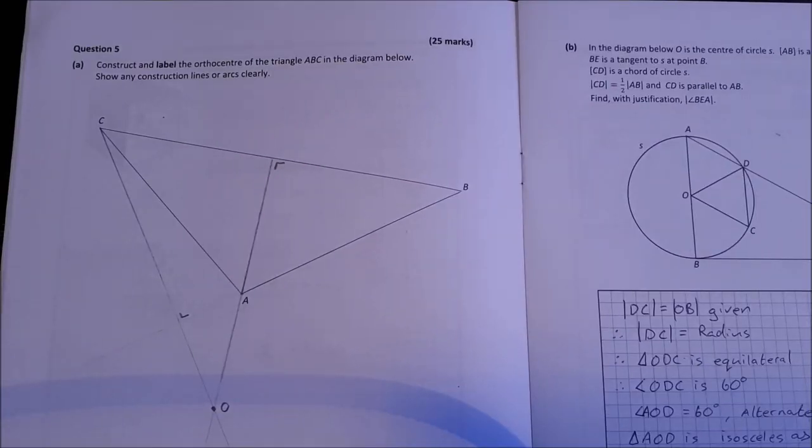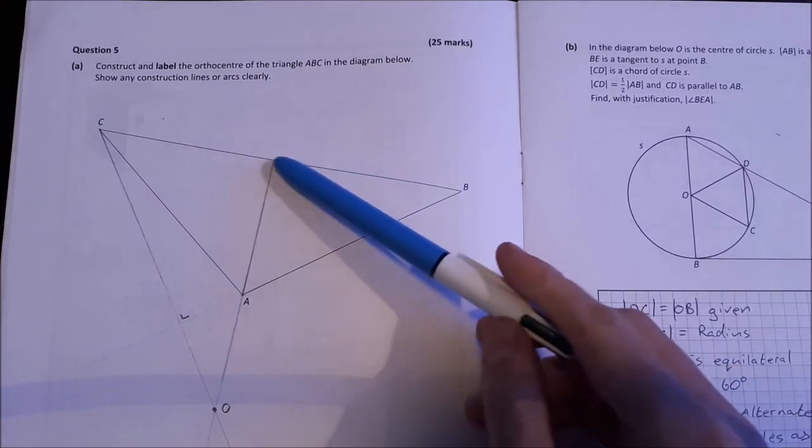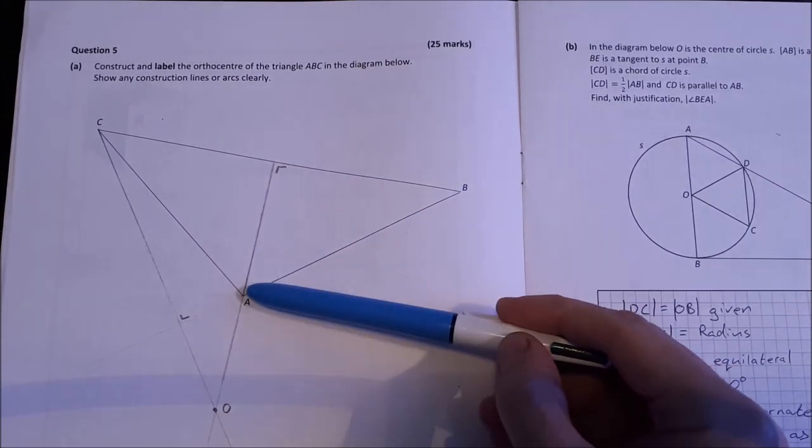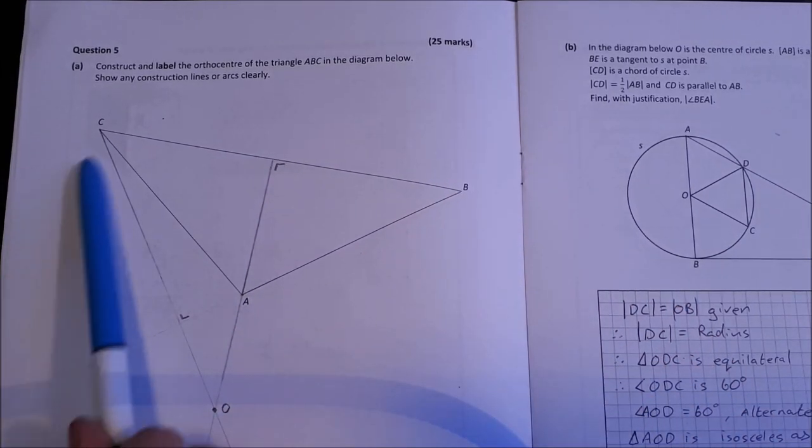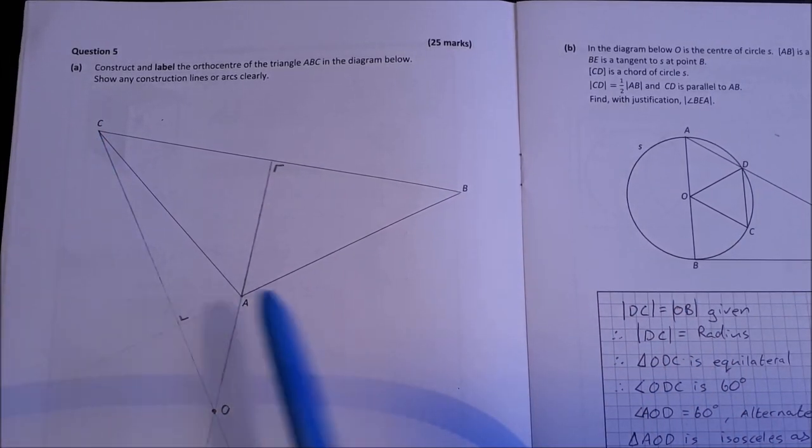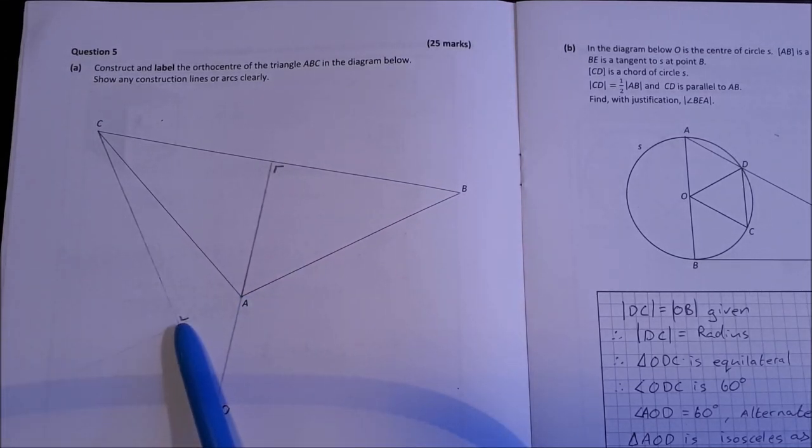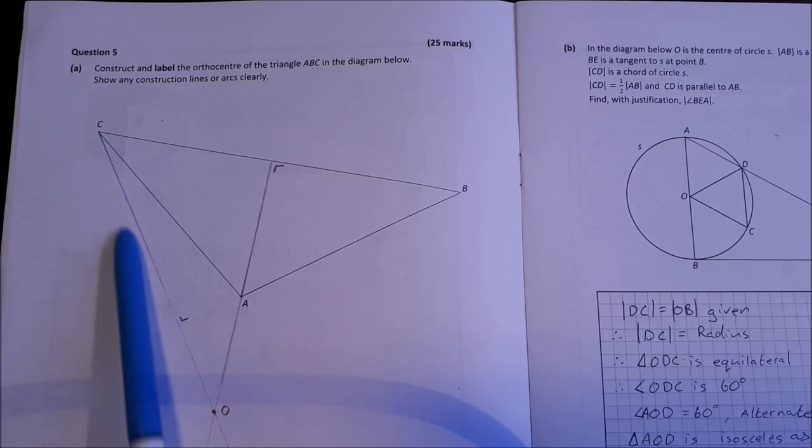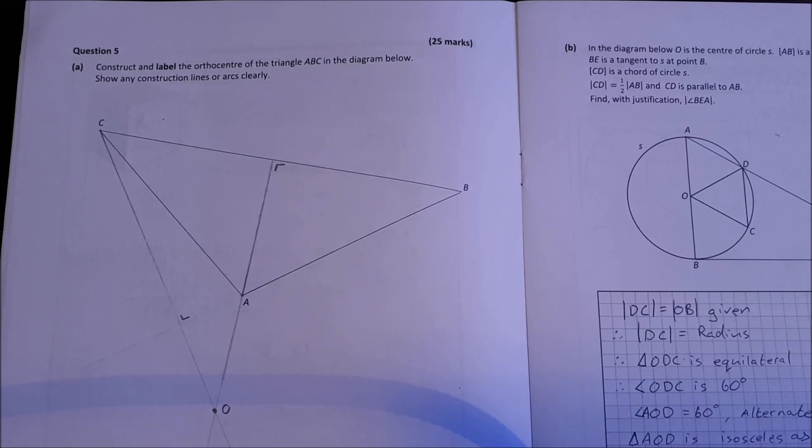Question 5. Construct and label the orthocenter of the triangle ABC in the diagram below. To get the orthocenter, what you do is you draw a line that is perpendicular to each side that then goes through the opposite vertex. So this one, perpendicular line going through the vertex. For this, from point C, you actually can extend this line AB and still it's going to be a perpendicular line coming from C through this line. And where they intersect, O, that's your orthocenter.